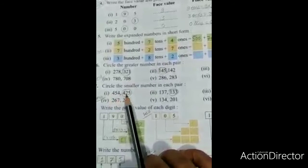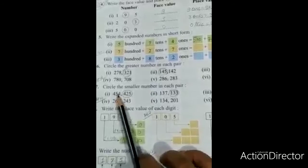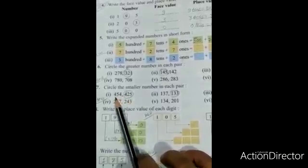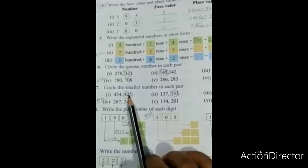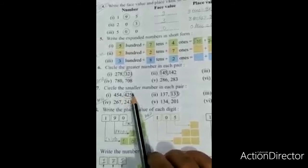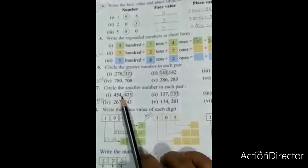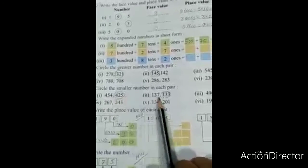Hundreds and tens place both have 4. In the ones place, here is 5 and here is 2. Which one is smaller? Two. So 425 is smaller than 454, so we circle 425.